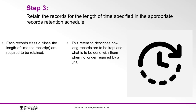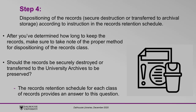Step 3: Retain the records for the length of time specified in the appropriate records retention schedule. Each records class outlines the length of time the records are required to be retained. This retention describes how long records are to be kept and what is to be done with them when they are no longer required by a unit. Using the records class you identified in Step 2, refer to the appropriate records retention schedule.